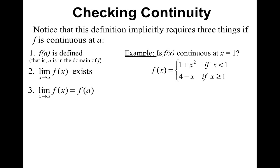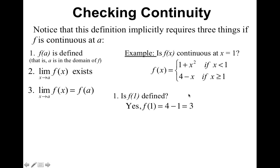So let's do an example. Is f of x continuous at x equals 1? We have a piecewise function. The first check is: is f of 1 defined? Since x equals 1, we have to use the bottom piece, so 4 minus x. Plugging in 1, I get 4 minus 1, which equals 3. So yes, f of 1 is defined.